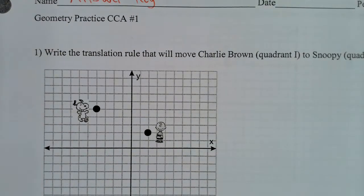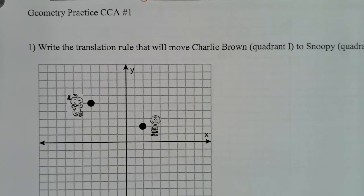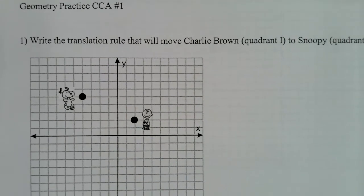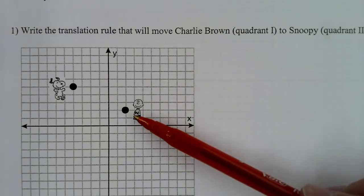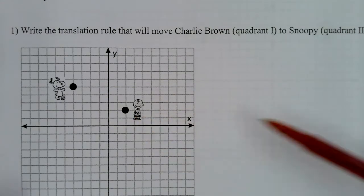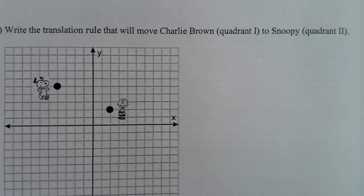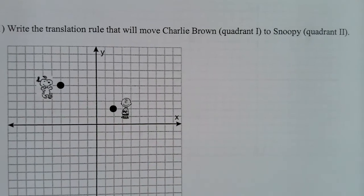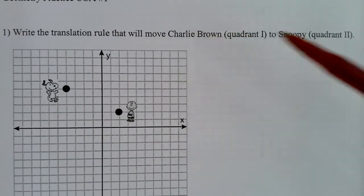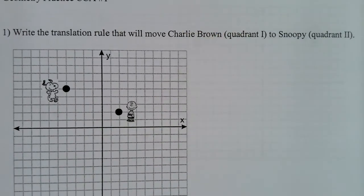Here's the practice CCA in geometry. Number one: write the translation rule that will move Charlie Brown, who is in quadrant one, to Snoopy, who is in quadrant two. I listed the quadrants in case you don't know who the characters are.